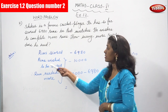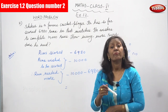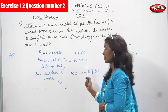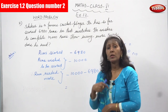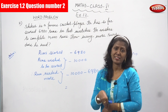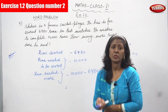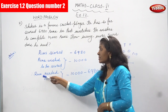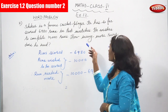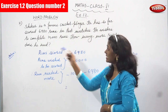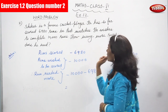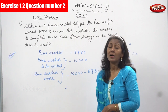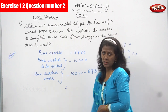Runs wished to be scored is 10,000. That means he has to score 10,000 runs — that is his intention, that is his aim. Runs needed more: how many more runs does he need? Run needed more by Shaker — that is what we have to find.